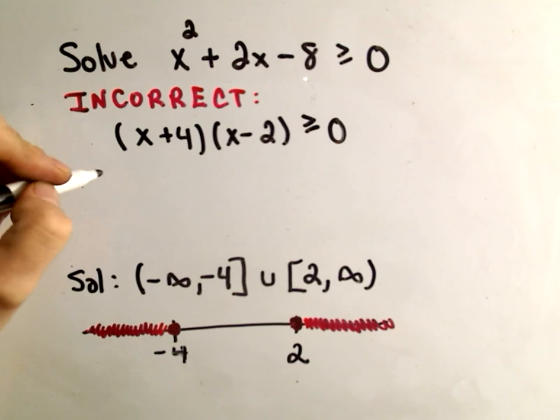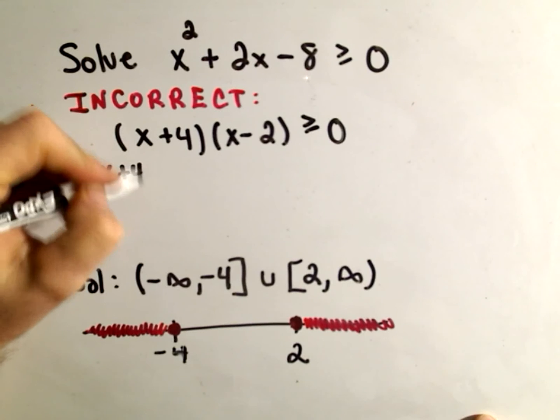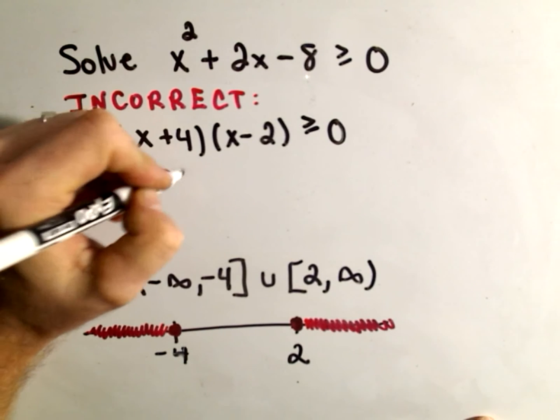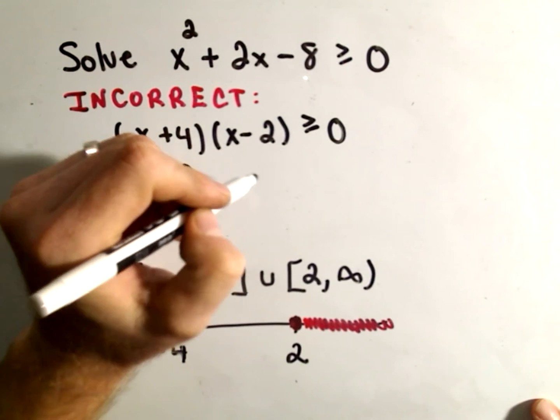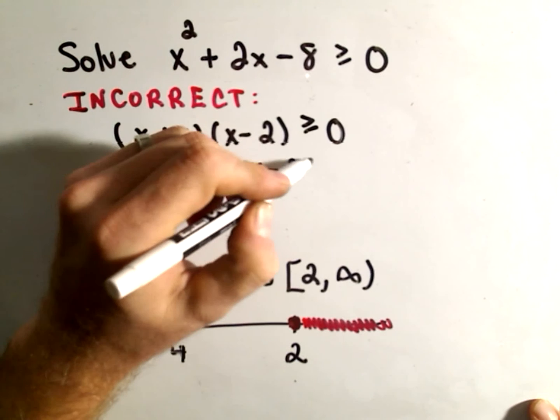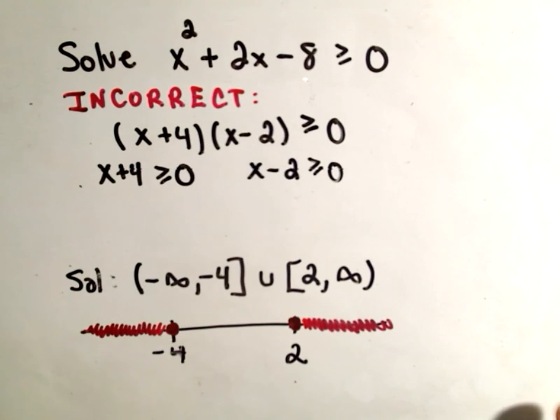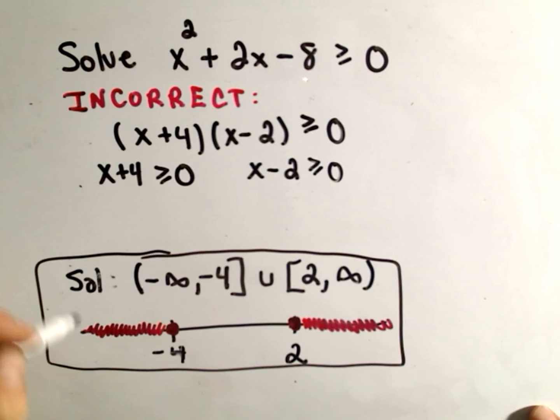People still want to do the same thing. They want to take x plus 4 and make that greater than or equal to 0. And then they want to take x minus 2 and make that greater than or equal to 0. So, the stuff down here, again, was the actual correct solution.